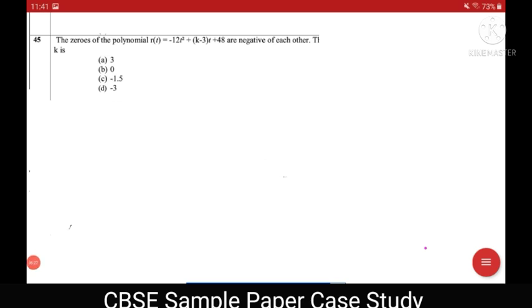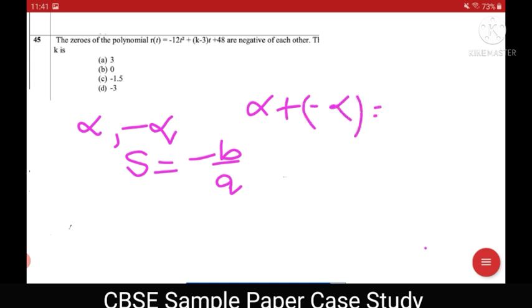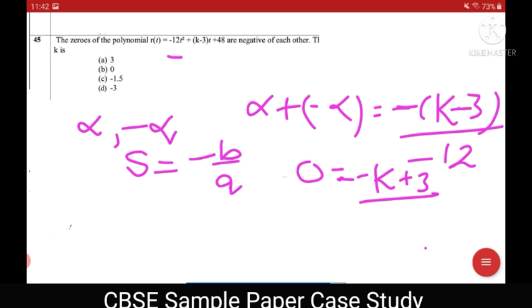Question number 45 says if zeros of this polynomial are negative of each other then find the value of k. Now let alpha and minus alpha are the zeros because they are given to be negative. Now clearly we should use the sum because sum of the zeros is going to be 0. And formula for sum of the zeros is minus b over a. So I can say that alpha plus minus alpha is equal to minus b. Now what is b? Minus k minus 3 upon a. a is minus 12. So this gives me 0 is equal to minus k plus 3 upon minus 12. Minus 12 on multiplication becomes 0 and we get the value of k as 3. So a is the correct option.